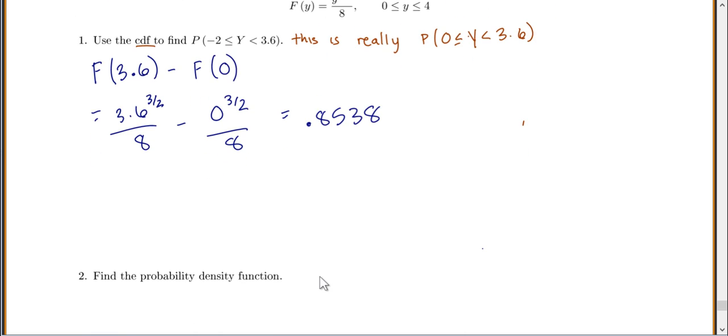Now, in my next one, I want to find the probability density function. So we are looking to go from the CDF, which we already have, to a PDF. And to go from a CDF to a PDF, you just take the derivative. So our PDF, or little f of y, is going to be equal to the derivative of our CDF, or capital F of y.